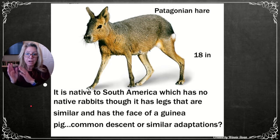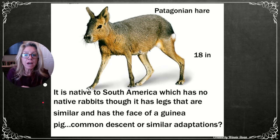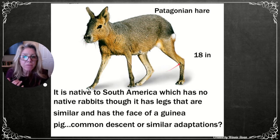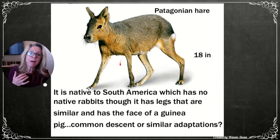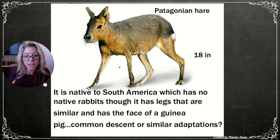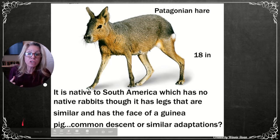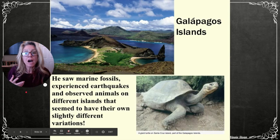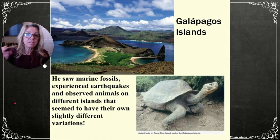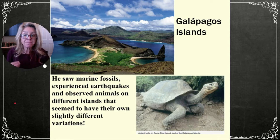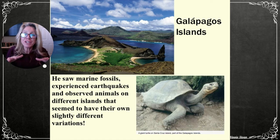One biogeographical observation Darwin made was the Patagonian hare — native to South America, resembling a rabbit or guinea pig face with rabbit legs. Did it share a common ancestor with rabbits, or did similar environments select for similar adaptations? Darwin also observed marine fossils on the Galapagos Islands and experienced earthquakes, indicating geological shifting.